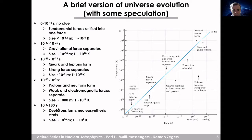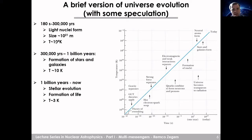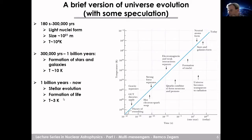After a few hundred seconds, the first nucleosynthesis starts — where the first nuclei, like deuterons, are formed. Once you have deuterons, you can start making heavier elements. Between 180 seconds and about 300,000 years, light nuclei start to form. Up to maybe a billion years, star and galaxy formation happens and the temperature drops to about 10 Kelvin. From that period until now, we have stellar evolution and the formation of life, with the temperature around 3 Kelvin.